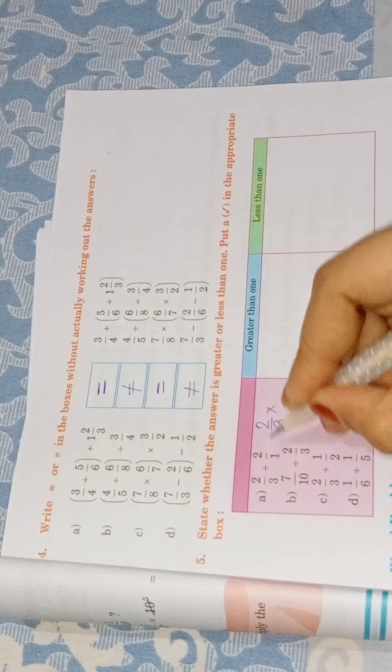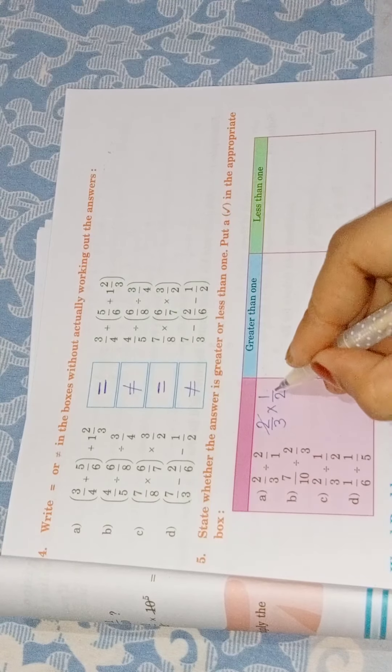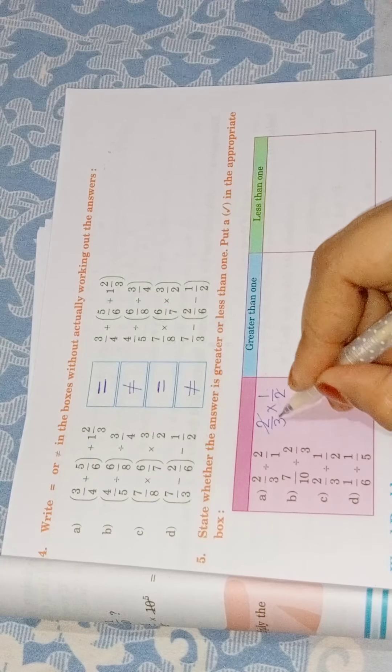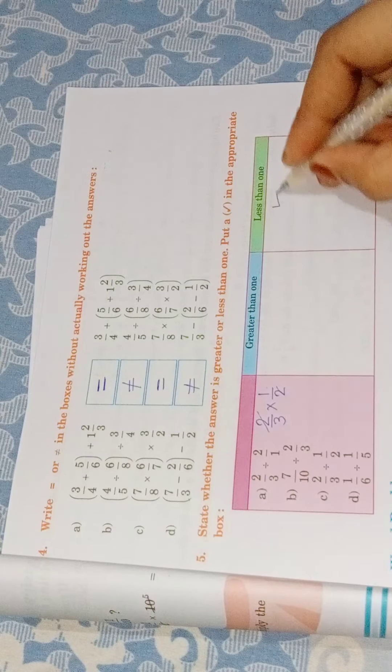So I have told you that if we are to solve it, we will change it to multiply, and the second number we will reciprocate it. As we reciprocate it, 2-2 cancel, and we get 1 upon 3. 1 upon 3 is less than 1, so we will tick on less than 1.